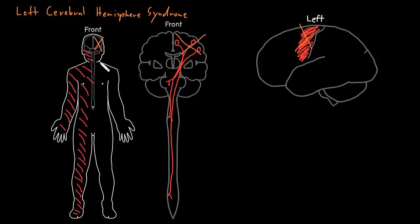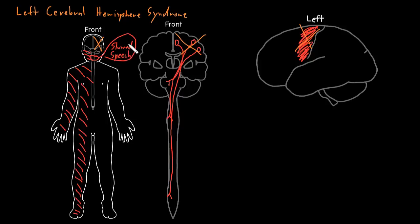Part of that abnormality often involves slurred speech, and that's from dysfunction of these upper motor neurons going to lower motor neurons that are controlling all the muscles of speech, such as the muscles of the lips that help make certain consonant sounds.